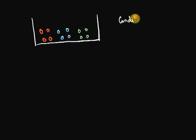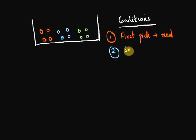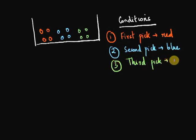And the conditions I need to fulfill are, first pick to be red, second pick to be blue and the third pick to be green. What is the probability that all these three events are favorable?